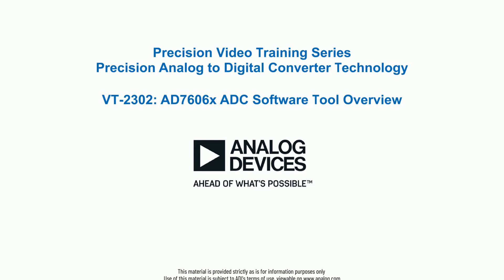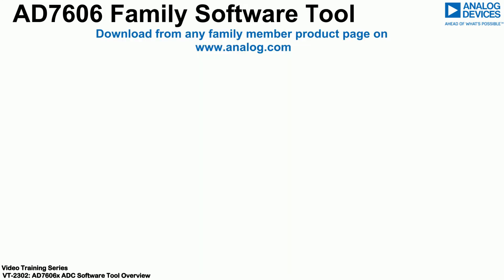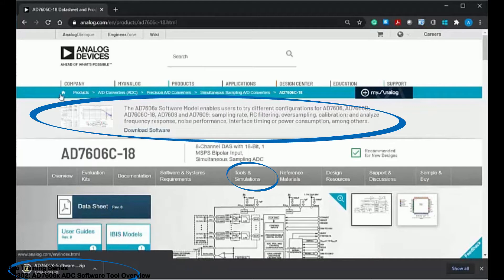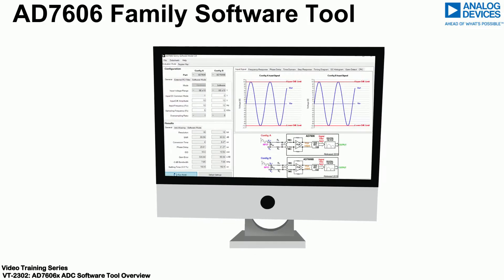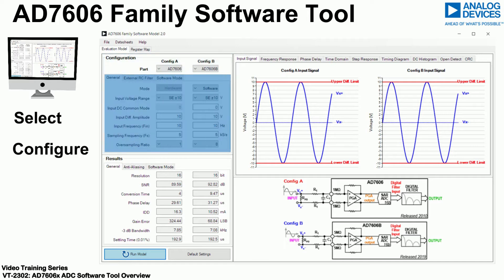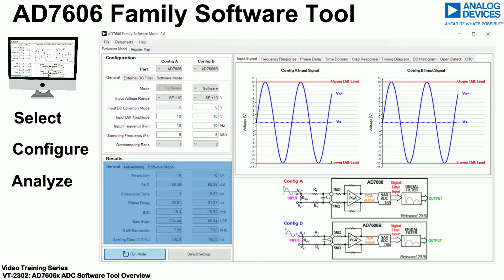Hello and welcome to the Analog Devices precision training video that focuses on precision analog to digital converter technology. We will bring you through the AD7606 software tool. The software tool is downloadable from the ADC product page. The tool allows customers to select the ADC they wish to review, configure for their specific measurement needs, and then presents the results for quick and easy analysis.